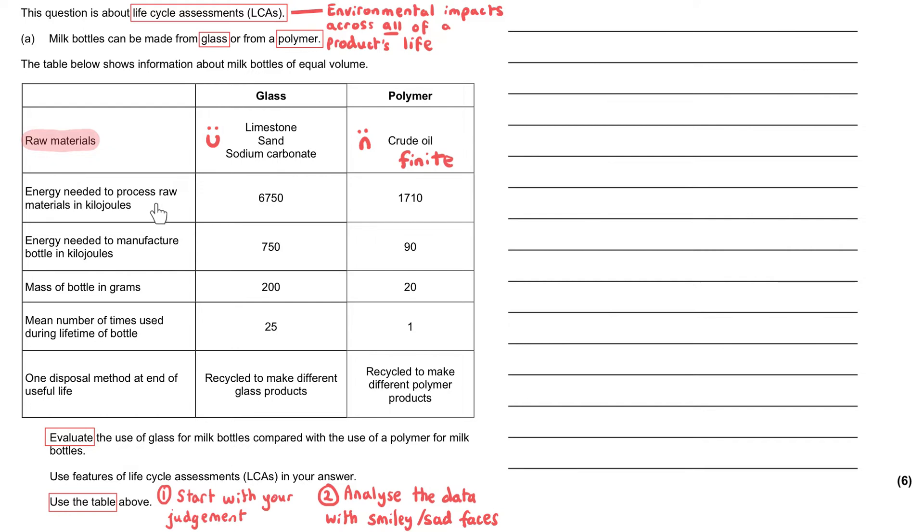The energy needed to produce the raw materials, 6750, that's more energy than 1710. So the glass has got a sad face, the polymer a happy face. The energy needed to manufacture the bottle, the glass again has more energy requirements and the polymer has less.